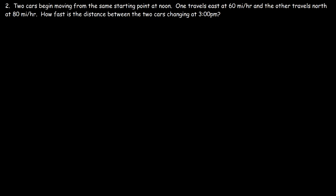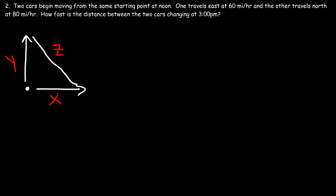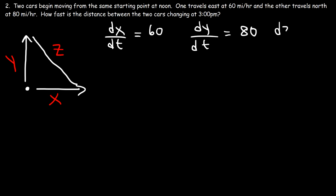How fast is the distance between the two cars changing at 3 o'clock? Let's draw a picture. The first car travels east and the second car travels north. We say x is the distance the first car travels east, y is the distance the second car travels north, and the distance between the two cars at 3 o'clock we call z. The first car is traveling east at 60 miles per hour — that's dx/dt. The second car is traveling north at 80 miles per hour — that's dy/dt. Our goal is to calculate dz/dt.